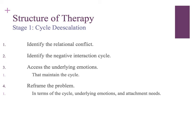The third step is a unique component to EFT, where you try to understand the emotions that are maintaining the negative interaction cycle. For example, when one partner withdraws, what emotion is attached to that? Is it fear, sadness, anger, jealousy, or shame? You take a typical interactional cycle with behavioral components and add a layer of emotion to understand which emotions are attached to those behaviors and play a role in maintaining the cycle.